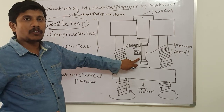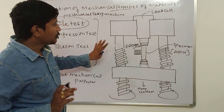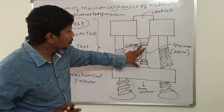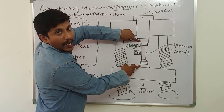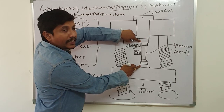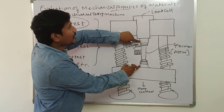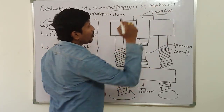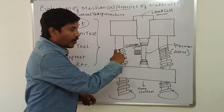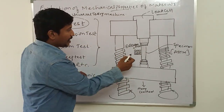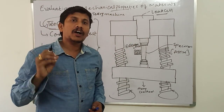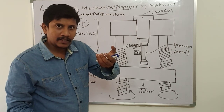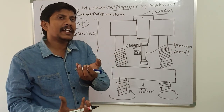Thus we will be finding out the properties with this tensile testing machine. A standard specimen as per the ASTM standards is gripped between the two heads and a progressively increasing load is applied. The load is measured with the help of a load cell, and the extension of the specimen is measured with the help of an extensometer or strain gauge.